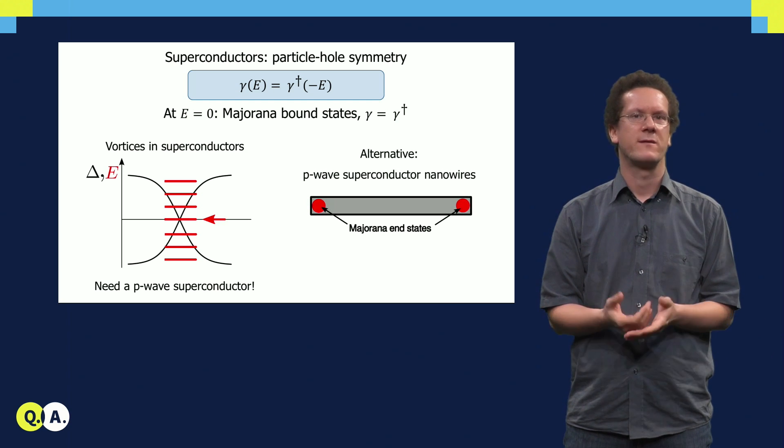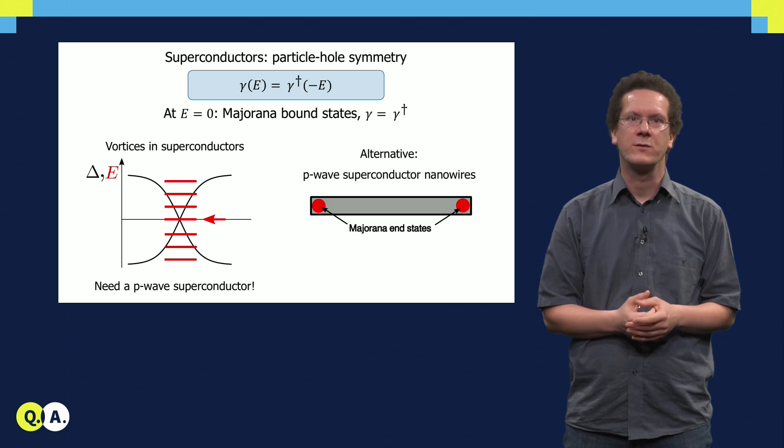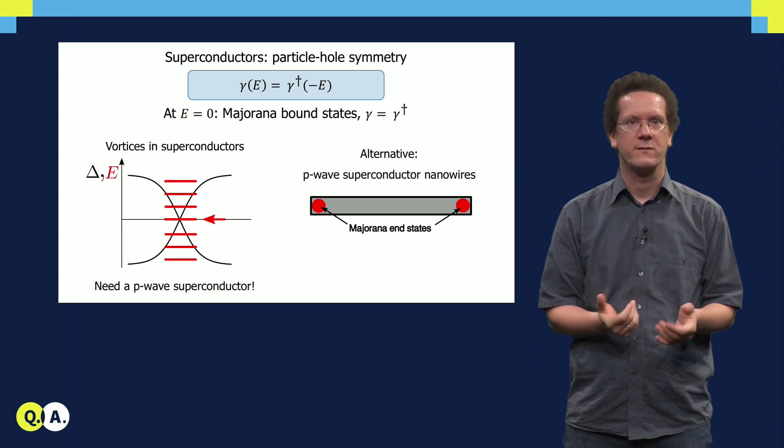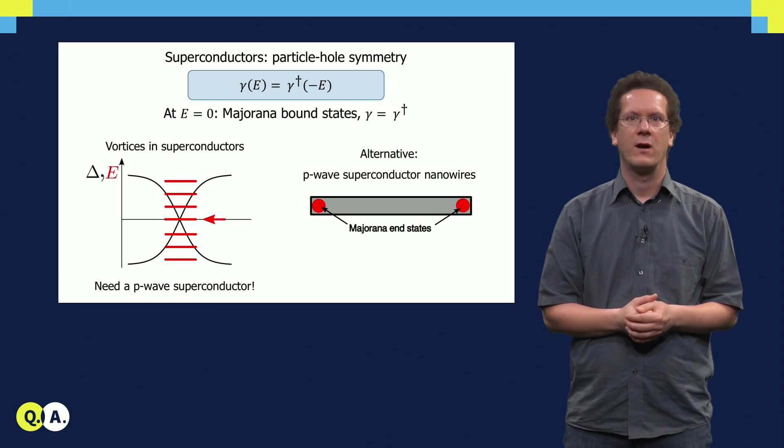It turns out that instead of going to vortices, which are actually hard to control, we can go to one-dimensional systems, nanowires. If you make a nanowire out of p-wave superconductor, you will also get Majorana states at the ends of the wire.